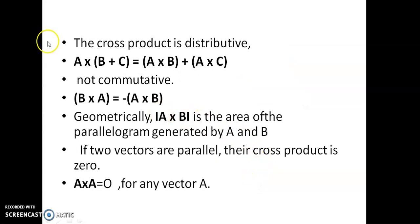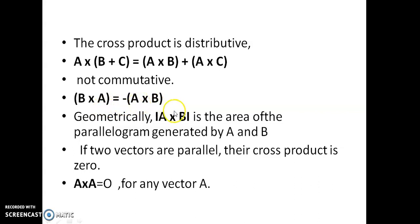Now, the properties of the cross product. The cross product is distributive: vector A cross (vector B + vector C) = vector A cross vector B + vector A cross vector C. The second property is that it is not commutative: B cross A is not equal to A cross B. In fact, B cross A = −(A cross B). We have seen that one is into the plane and the other is out of the plane, so there is a direction change between B cross A and A cross B.